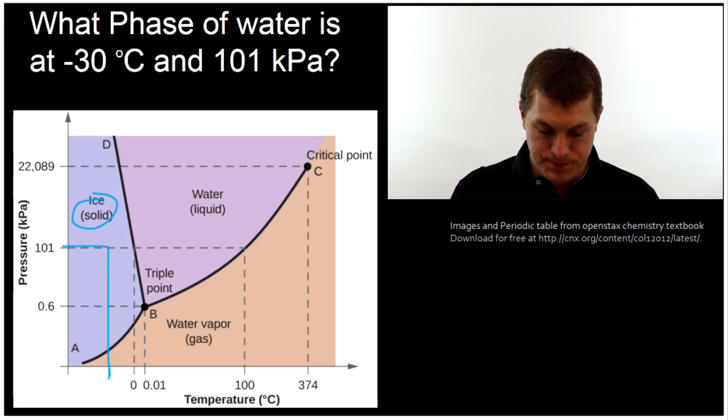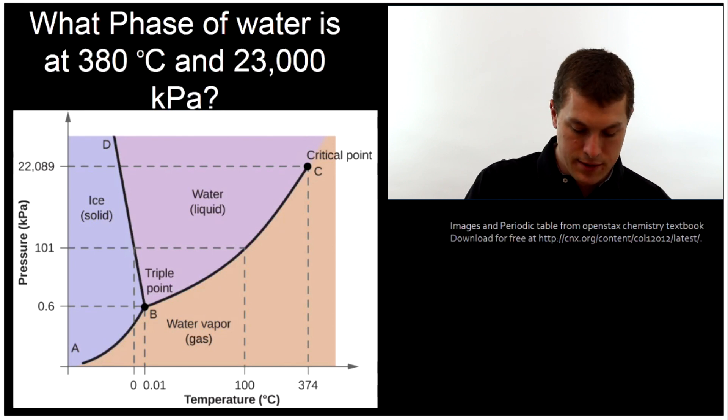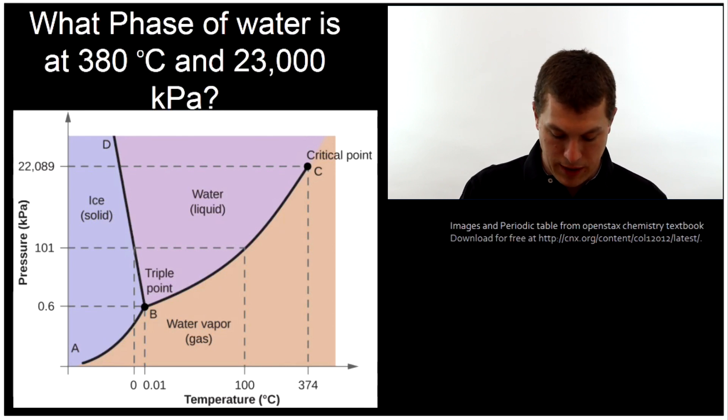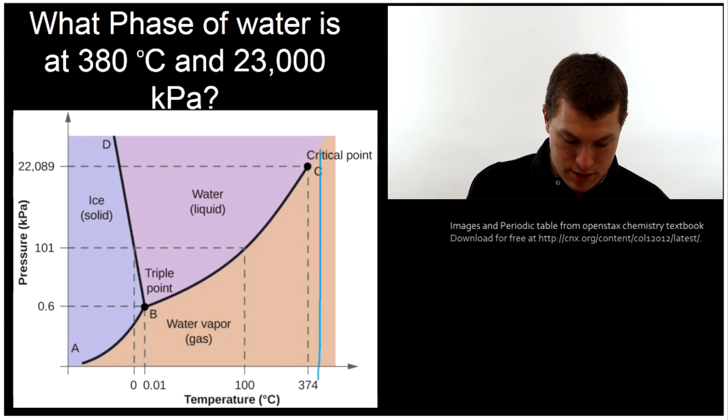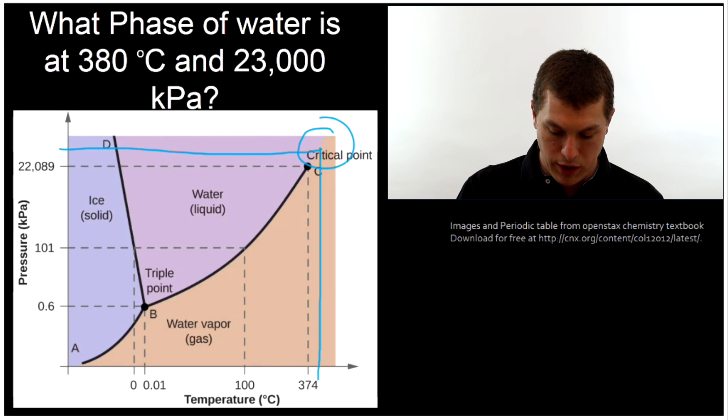All right, let's ask another question. What phase of water is at 380 degrees Celsius and 23,000 kilopascals? So that's really hot and really high pressure. Let's take a look at where that would be. That would be right around here for the temperature and right about here for the pressure. That's up in this weird region where it's beyond, you can see what's called that critical point.